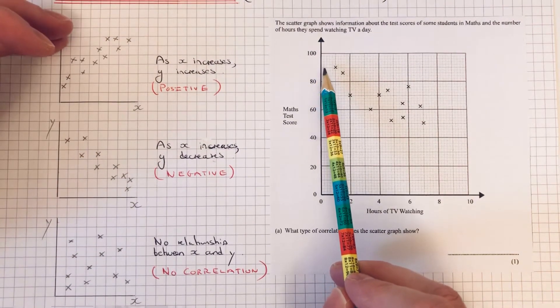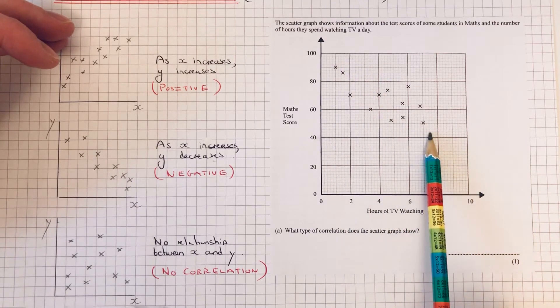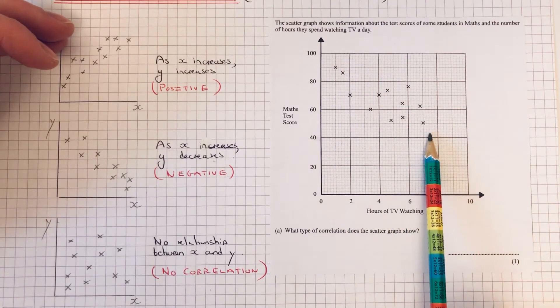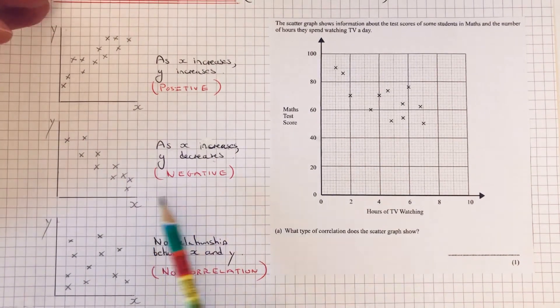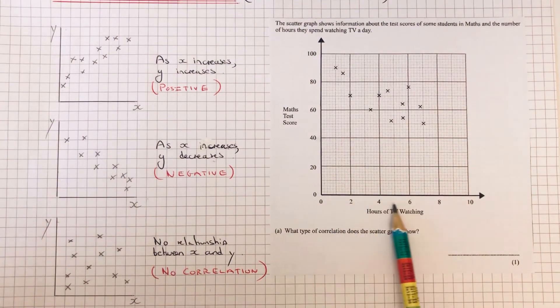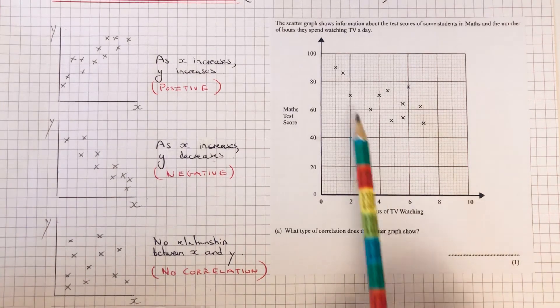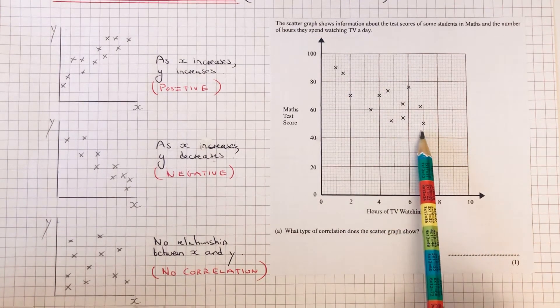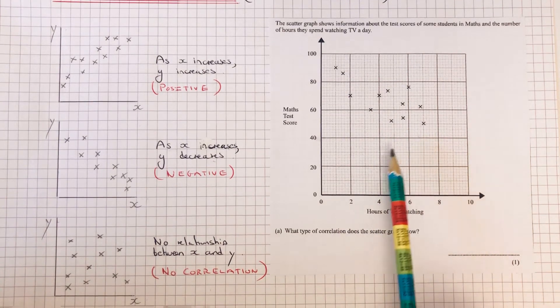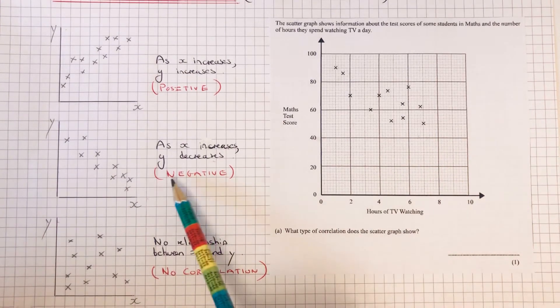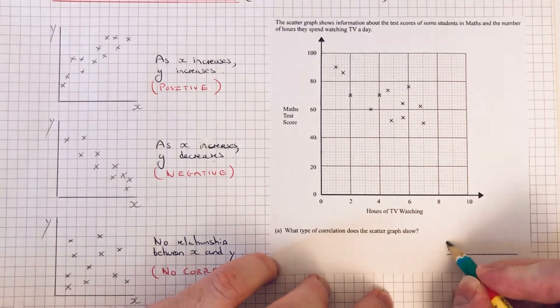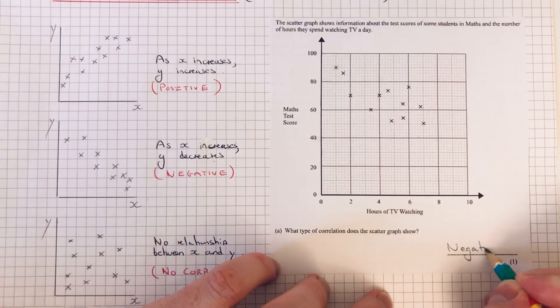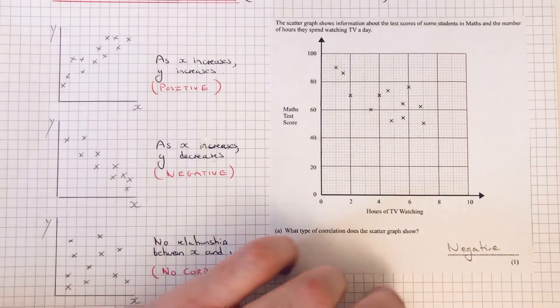So it's like this one here. As the hours of TV watching increase, the test scores of the students go down. This is an example of negative correlation, so that would be our final answer.